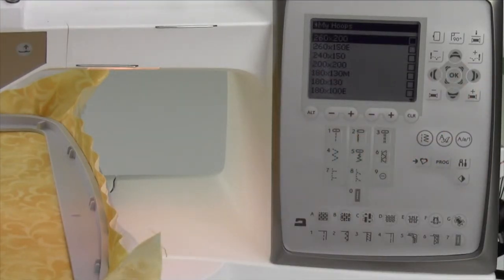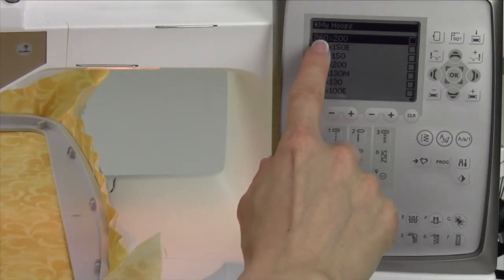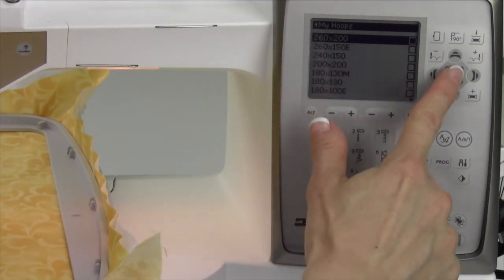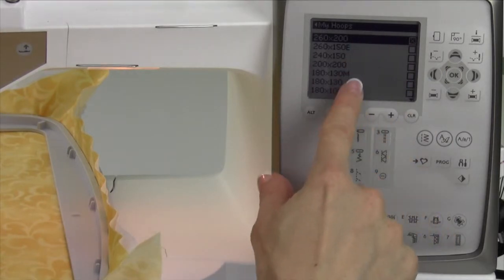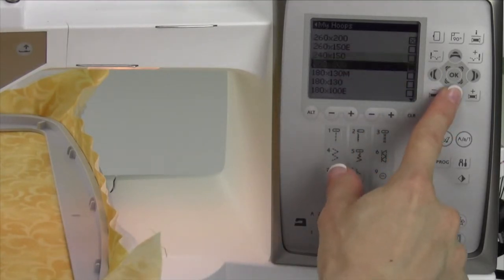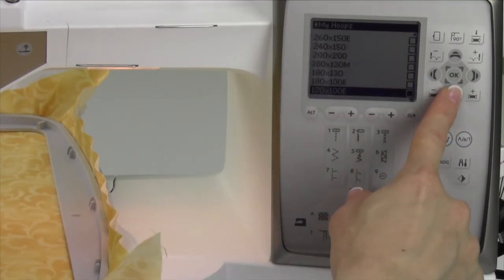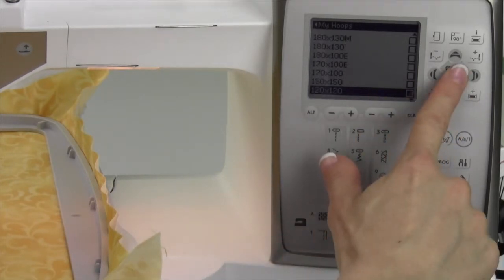We're going to check off which hoops we currently own. The two hoops that come with this machine are the 260 by 200. Touch okay and put a little check mark in that box. Arrow down. The other hoop that comes with this machine is the 120 by 120. Touch okay.